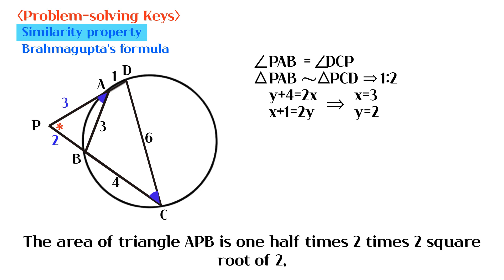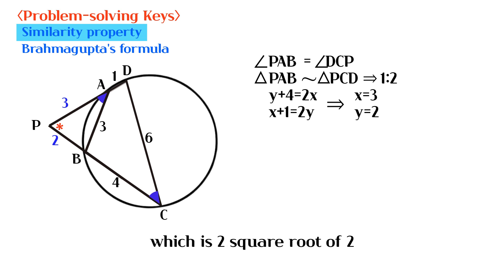The area of triangle APB is one-half times 2 times 2 square root of 2, which is 2 square root of 2.